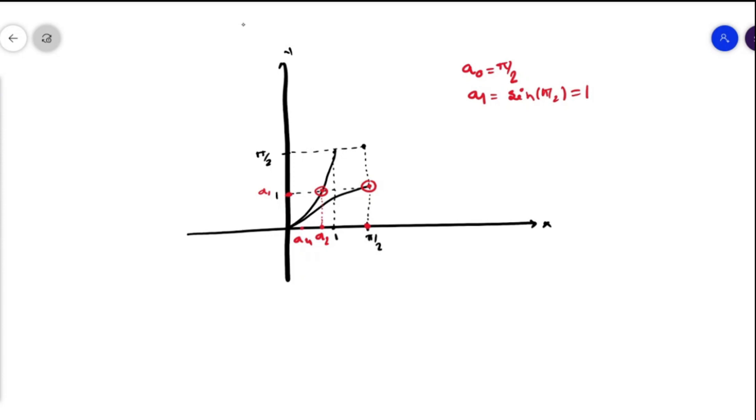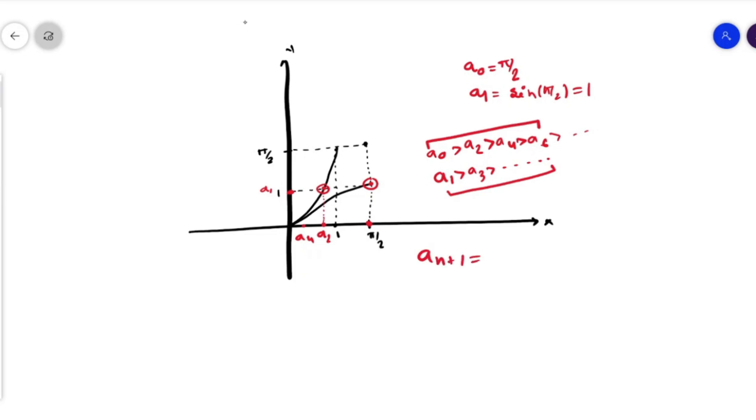From here we can see that somewhere here will be a_4. We can see that a_2 > a_4 > a_6, and this is also a_0 is bigger, and this is going on on the x-axis. On the y-axis, we have a_1 > a_3 and this goes on.